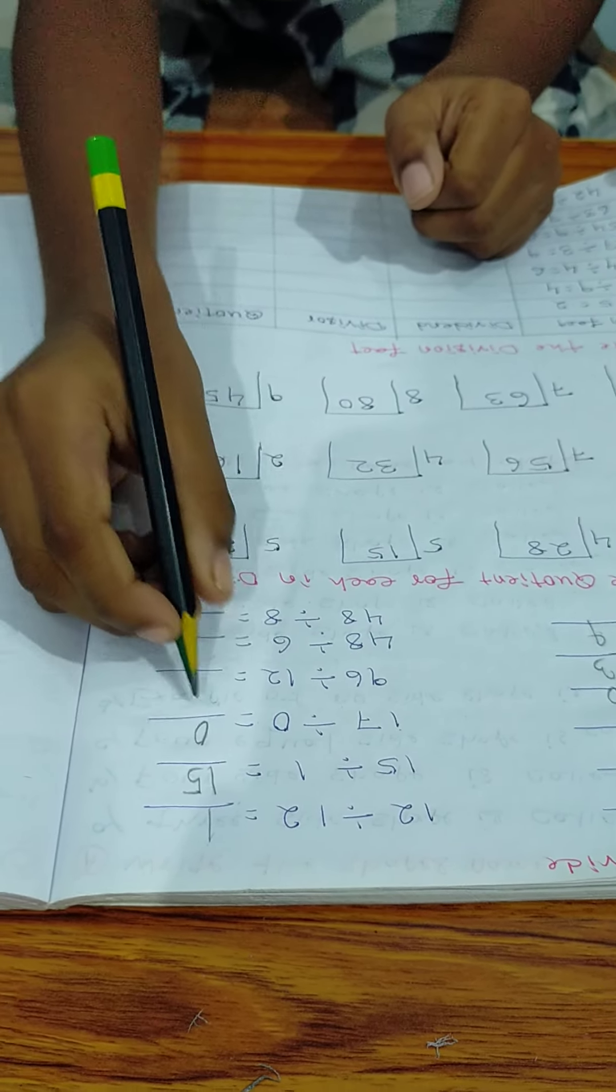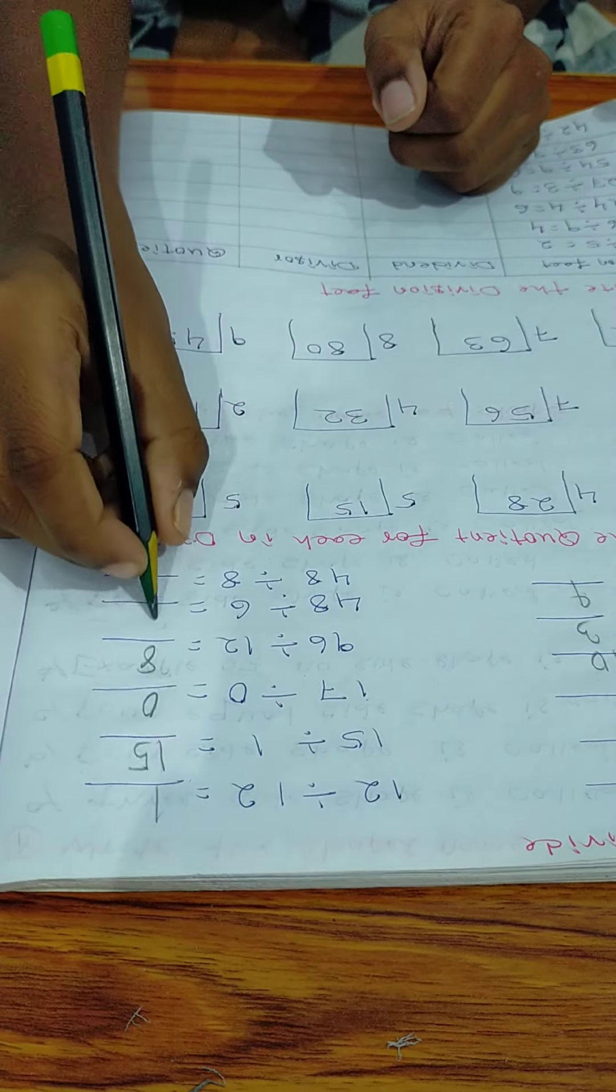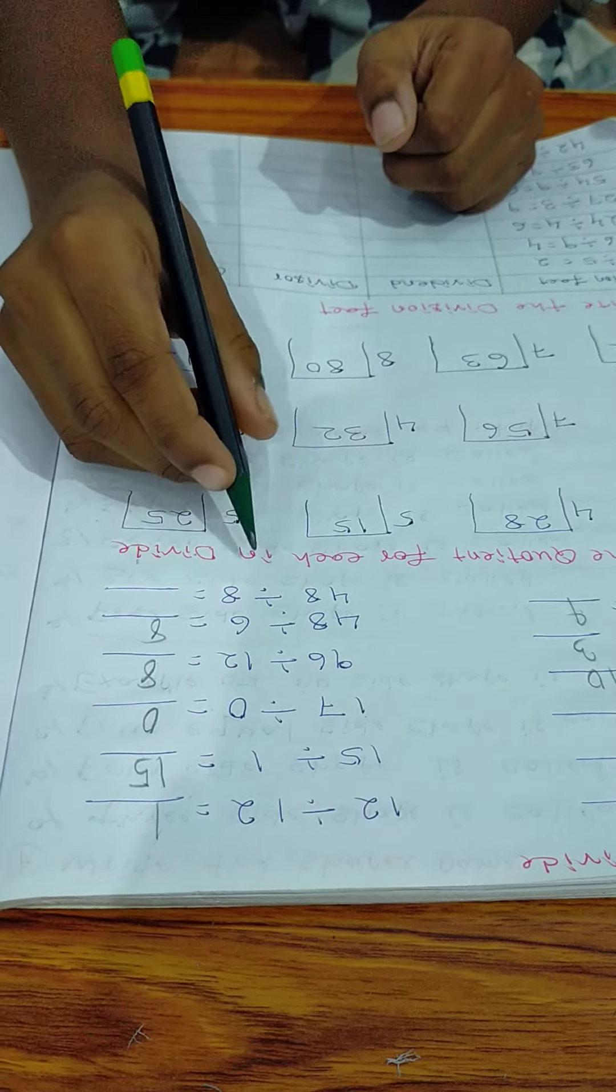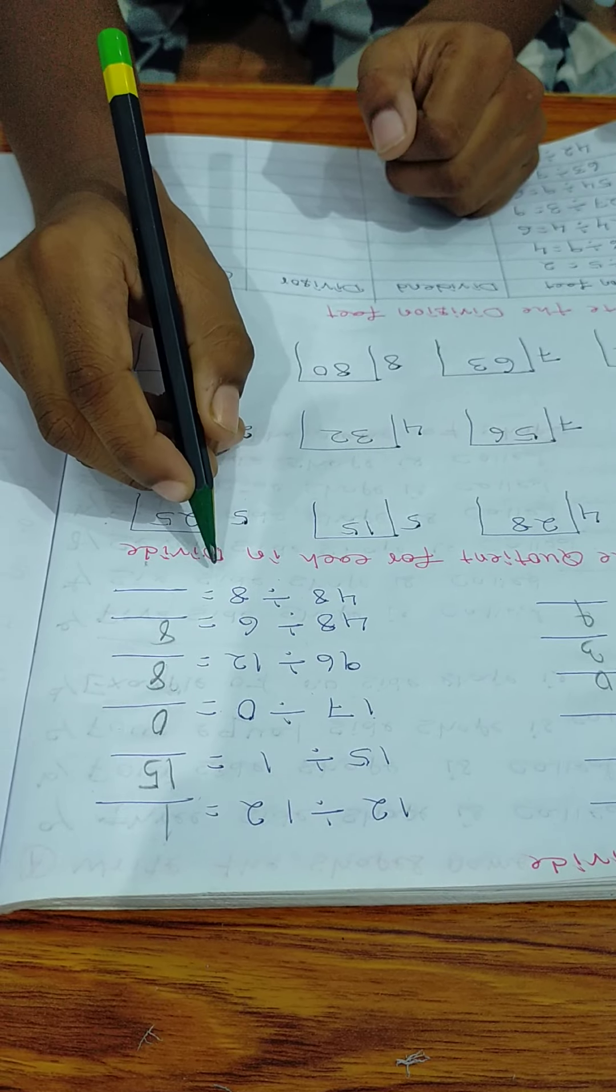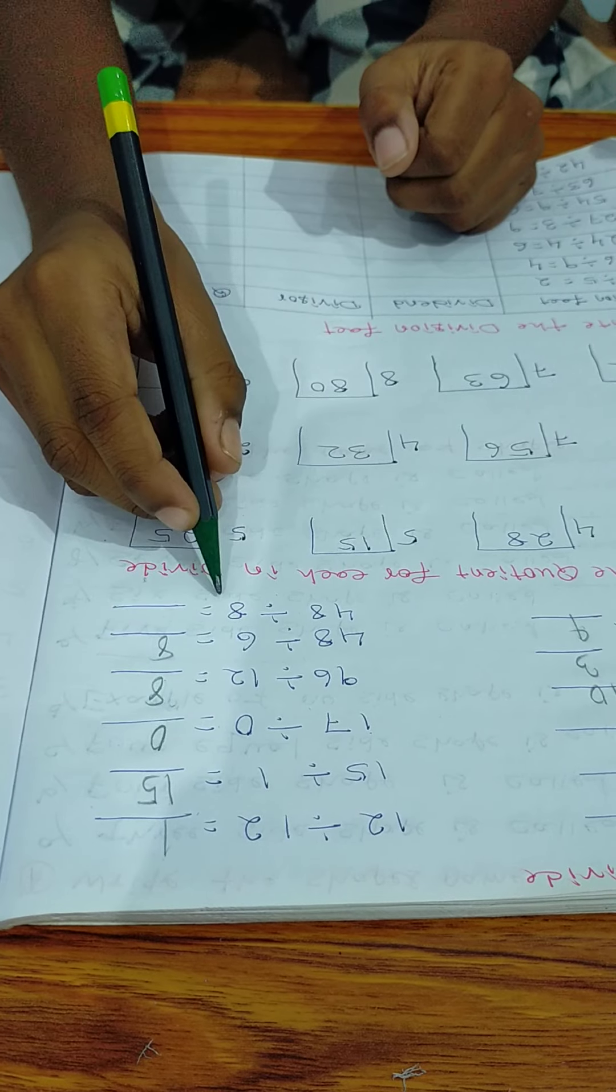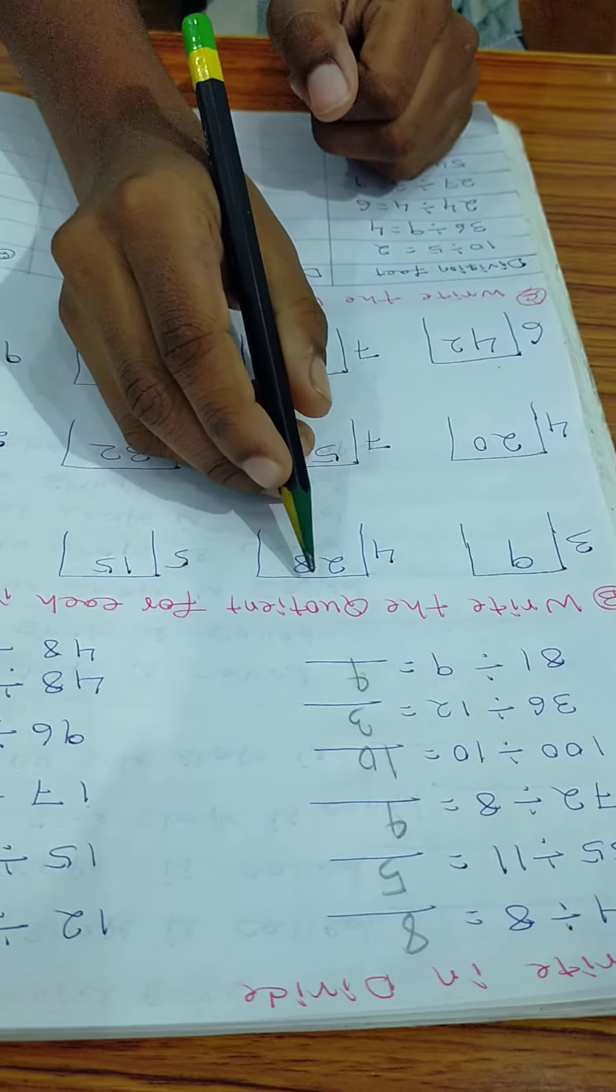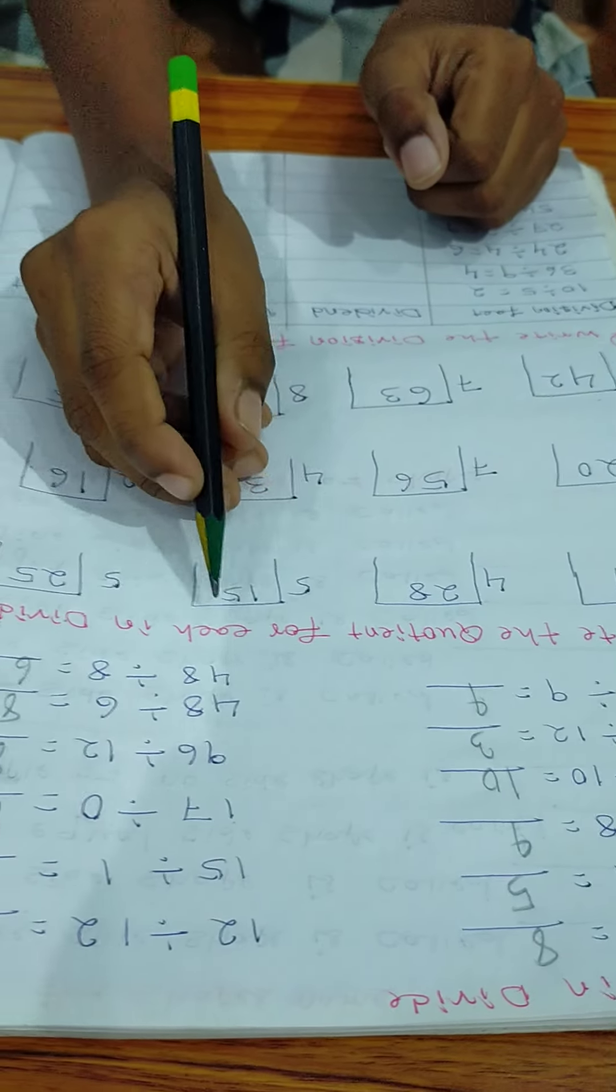96 divide 12 is equal 8. 48 divide 6 is equal 8. 48 divide 8 is equal 6.